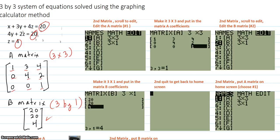We take the second matrix, scroll over to edit, and hit one, which puts you in the matrix A edit screen, which is right here. Make it be a 3 by 3, because it's a 3 by 3 system of equations, and put in the coefficients. So you hit here, put the 3, put the 3 here, you scroll, keep scrolling.